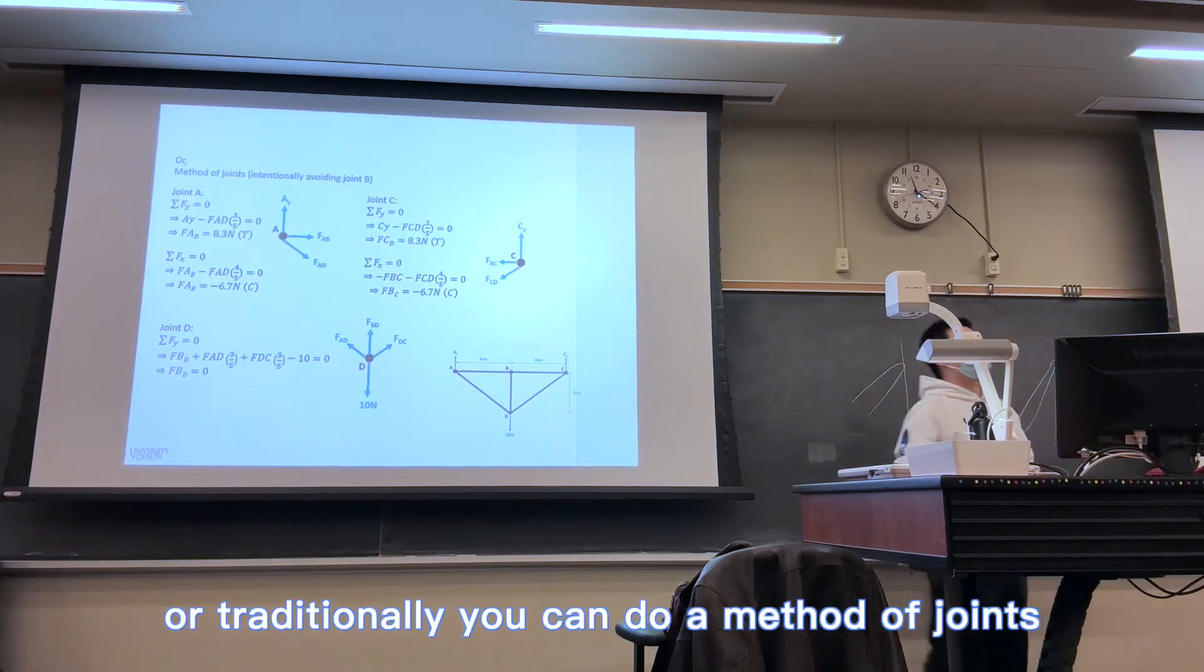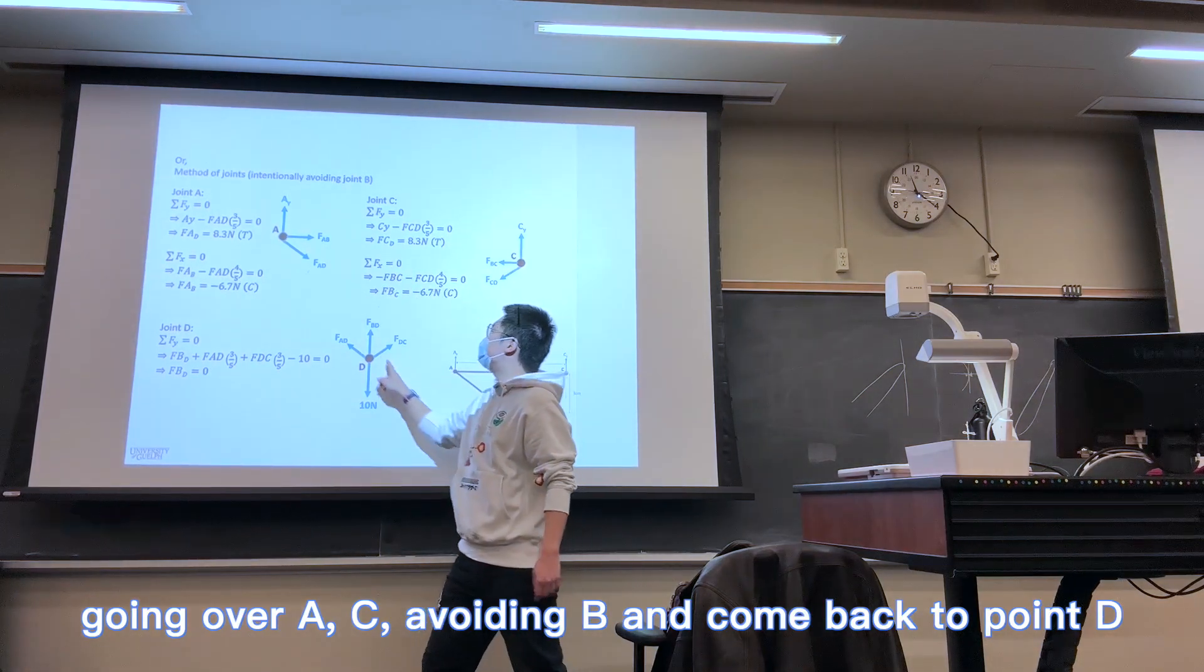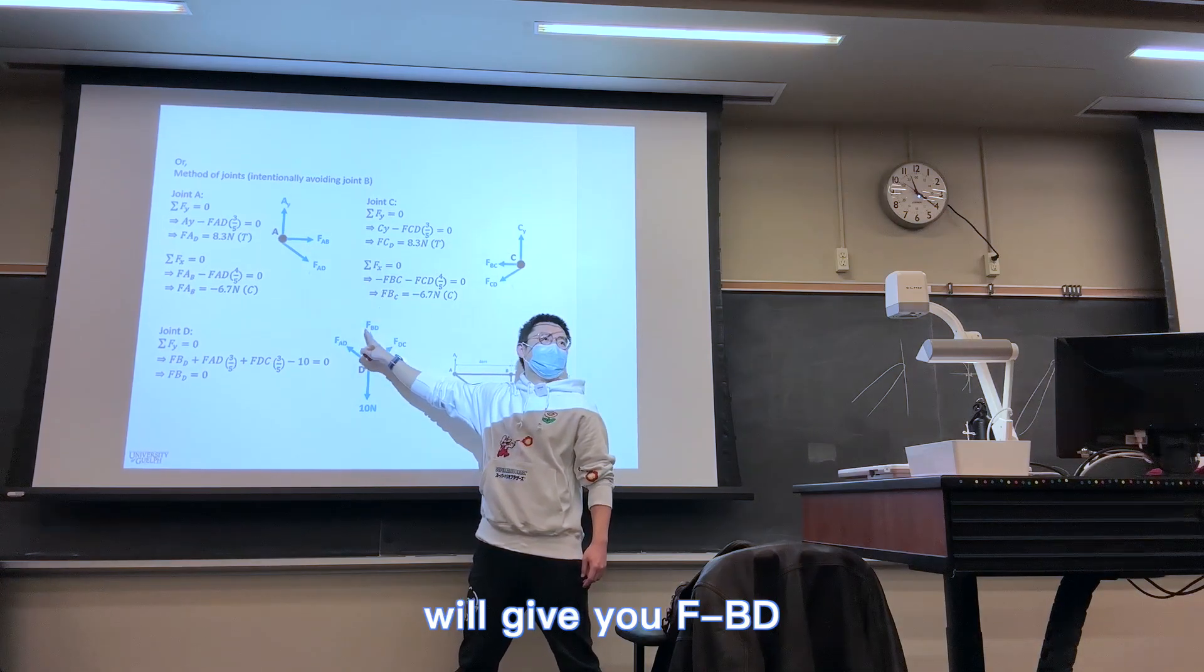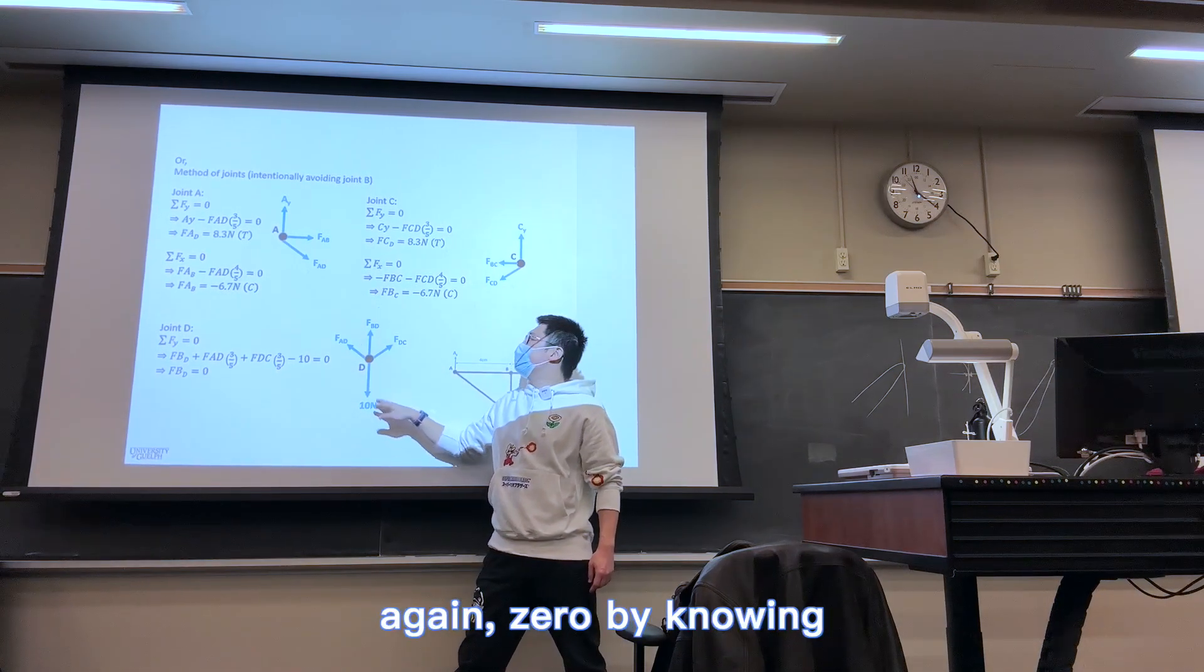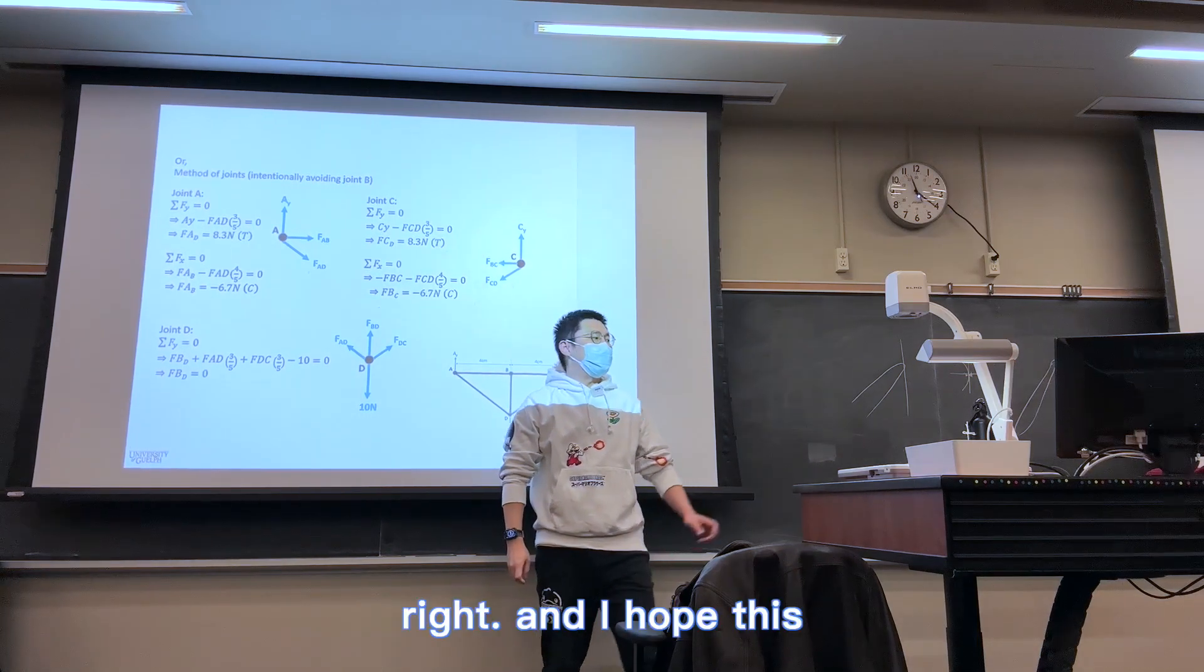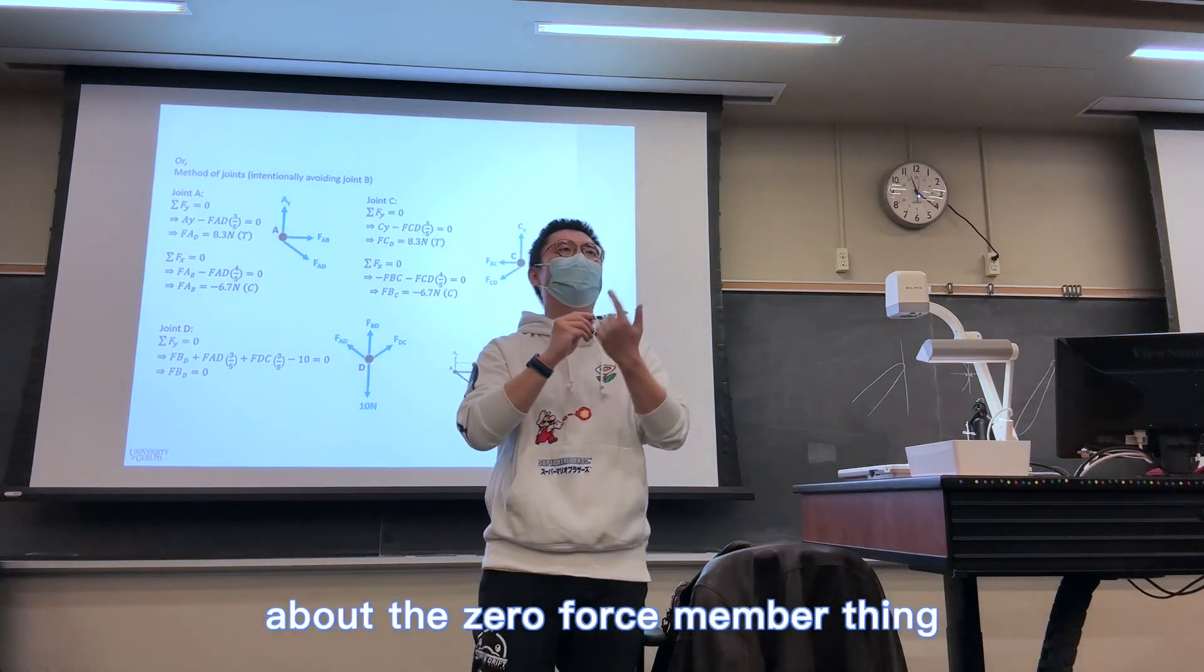Or traditionally, you can do a method of joints. Going over A, C, avoiding B, and come back to point D will give you FBD, again, 0, by knowing FAD and FDC. And I hope this little demonstration will help you make more sense about the zero force member thing.